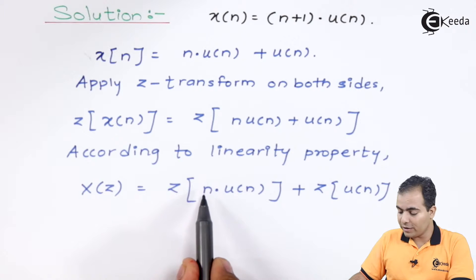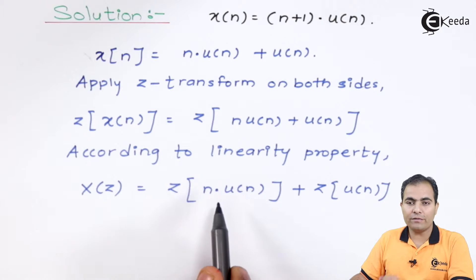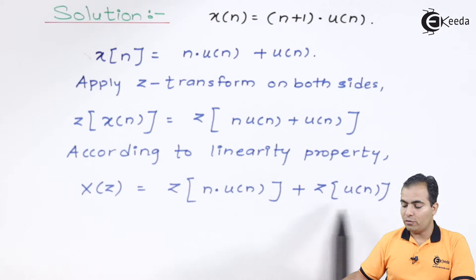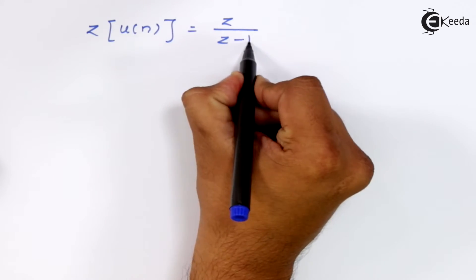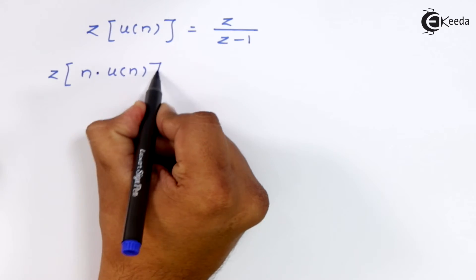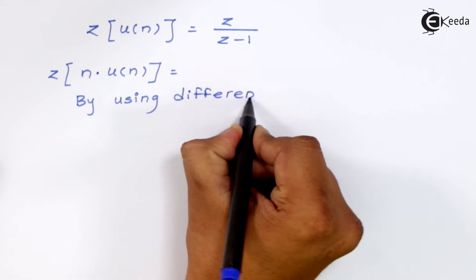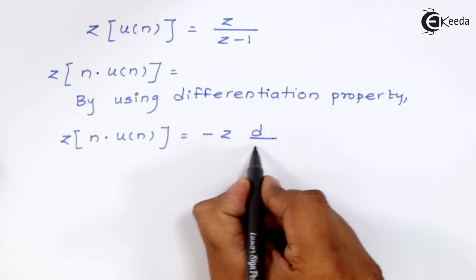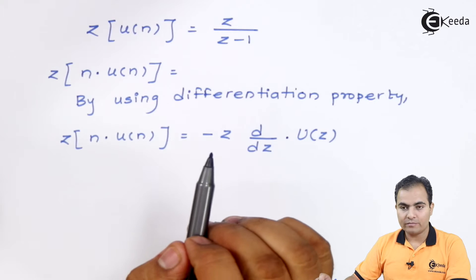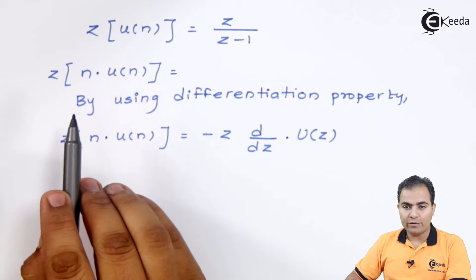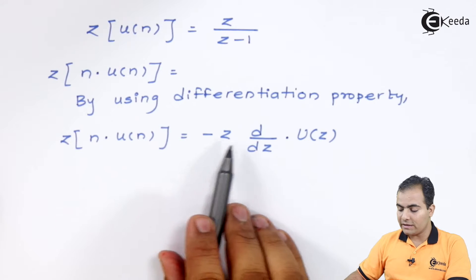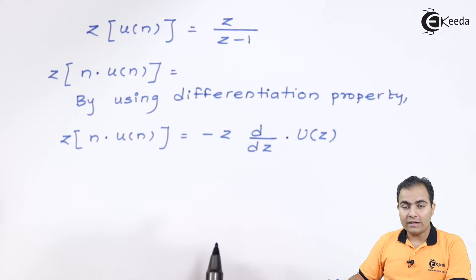The order of n is 1, which means we have to differentiate u(n) only once. If the order of n were 2, we would differentiate twice. According to the differentiation property, n·u(n) equals −z · d/dz of U(z), where U(z) = z/(z−1).